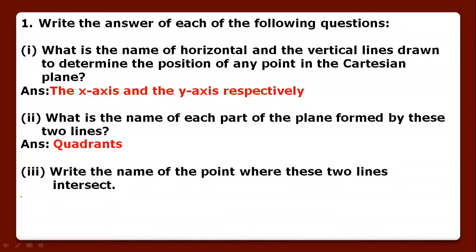Write the name of the point where these two lines intersect. We have to name that point jaha pe x-axis and y-axis intersect karti hai, that is called the origin.